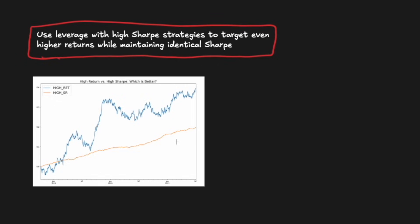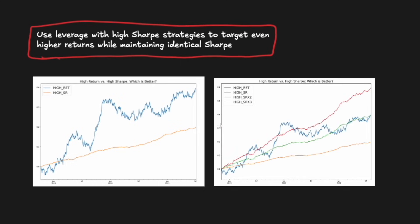So back to our original question here of whether high ret or high SR is better. Given these results around leverage, we could just lever up the high Sharpe - this orange line, the high SR portfolio - to obtain equal or higher returns than the high ret portfolio while maintaining that same nice high Sharpe. The graph shows high SR, the original orange line, levered up to 2x and 3x leverage. As you can see, we can maintain the smoothness, the nice smooth return profile of the original orange line. Actually, the profiles are identical in terms of their wiggles.